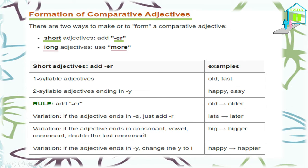A variation: if the adjective ends in consonant-vowel-consonant, we double the last consonant. For example, 'big' has a consonant G preceded by a vowel, so we double the G — it becomes 'bigger.' Another variation: if the adjective ends in Y, change Y to I and add -ER. Like 'happy' — we omit the Y, change it to I, and add -ER. Hope that's clear.